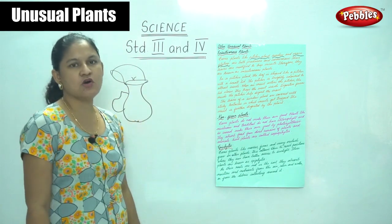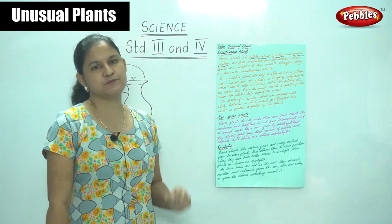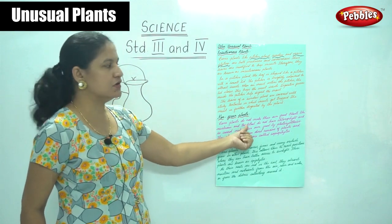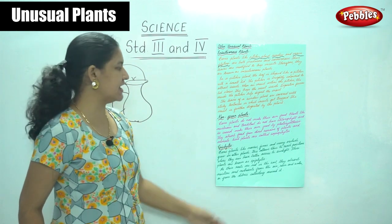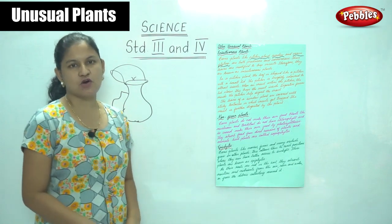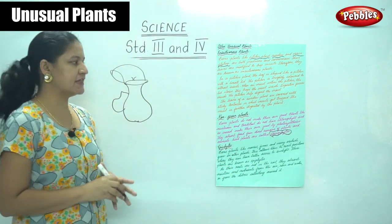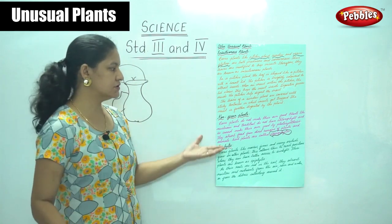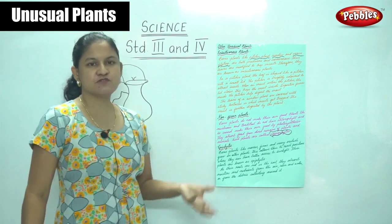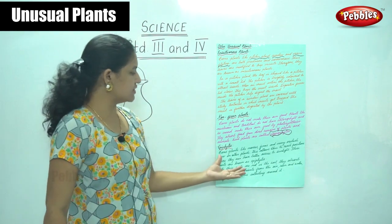The next unusual plant is non-green plants. They are not green because of the absence of chlorophyll, which is the green-colored pigment that provides the color. Plants like mushroom and toadstool do not have chlorophyll and cannot make their own food by photosynthesis. They absorb food from the dead and decaying remains of plants and animals. Such plants are called saprophytes.